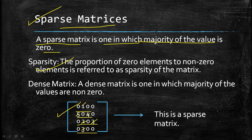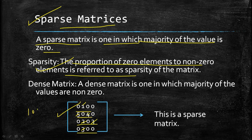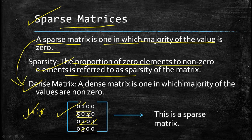What is sparsity? The proportion of zero elements to non-zero elements is referred to as the sparsity of the matrix. Here, ten are zero elements and six are non-zero elements, so the ratio ten-to-six is known as the sparsity of the matrix. A dense matrix is just the opposite of a sparse matrix — a dense matrix is one in which the majority of the values are non-zero.